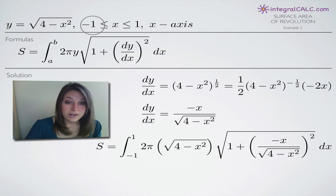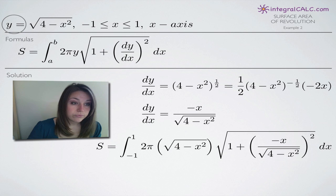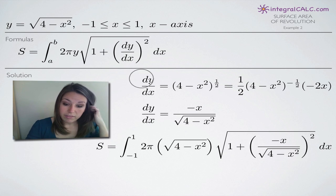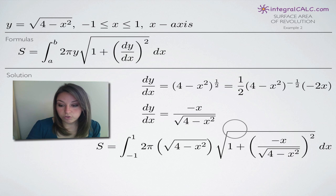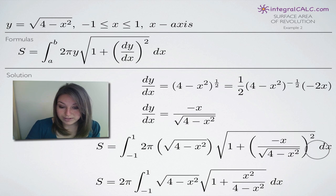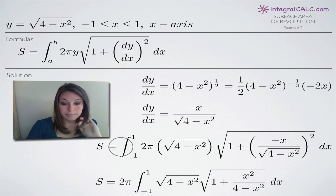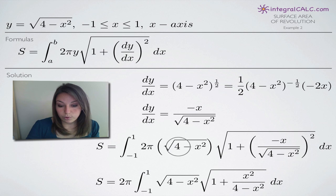Now that we've calculated dy/dx, we can plug it into our formula and start simplifying within the integral. They've asked us to evaluate between negative one and one, so we plug in negative one for a and one for b as our limits of integration. We leave two pi alone. For y, our original function is y equals the square root of four minus x squared, so we plug that in. Within the square root sign, we leave the one alone and plug in the derivative dy/dx that we found, leaving the squared exponent and dx. We'll pull two pi out in front of the integral because it's a constant.